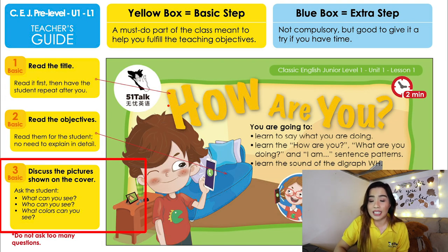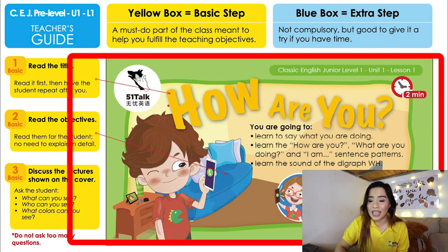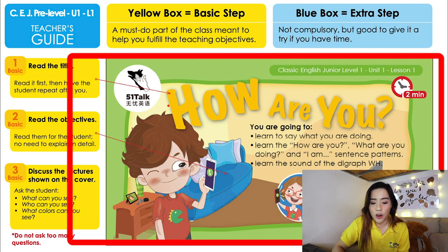Ask the student, 'What can you see in the picture?' The student will usually say things like, 'I can see Timmy. I can see Cindy. I can see a TV. I can see a phone. I can see a sofa.' Because this is a warm-up, I will just stop him and say, 'Wow, good job! That is right! I can also see those things.'